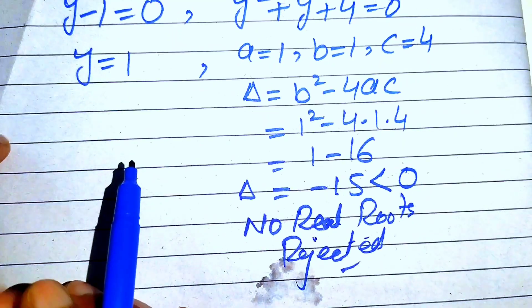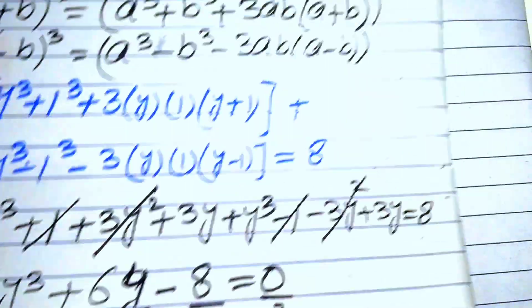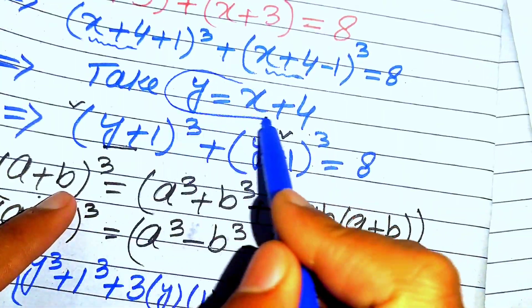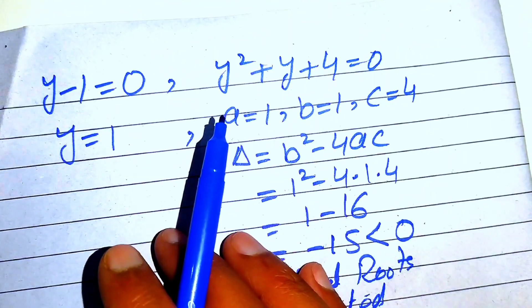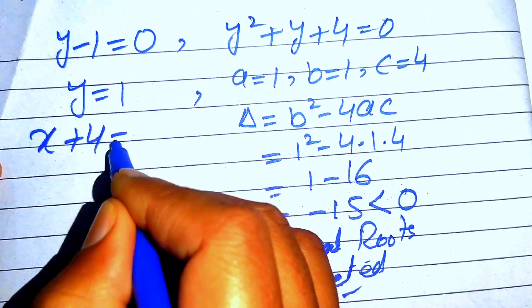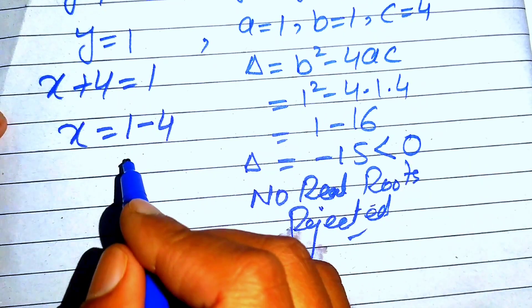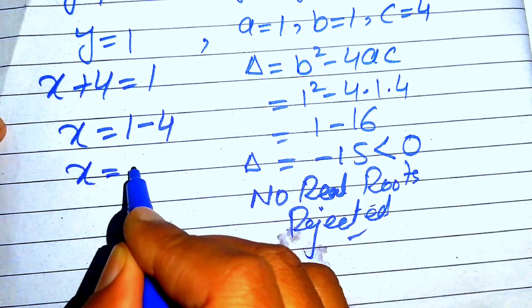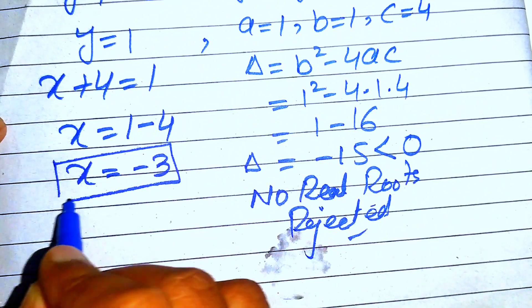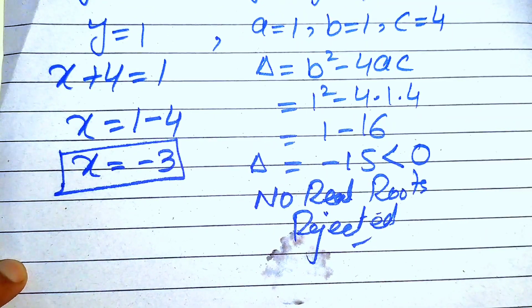From Case 1, y = 1. Since we defined y = x + 4, back-substituting gives x + 4 = 1, so x = 1 − 4 = −3. Therefore, x = −3 is the final answer. Thank you for watching — please subscribe to my channel for more exciting videos.